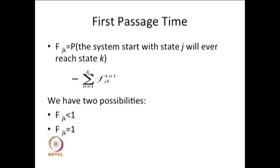Now, I am going to give the next concept called the First Passage Time Distribution. The First Passage Time Distribution is written with the f suffix jk, that is nothing but what is the probability that the system starting with state j will ever reach state k. So this probability I am writing as f suffix jk.